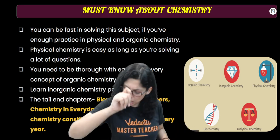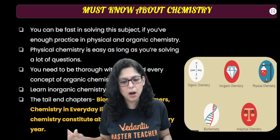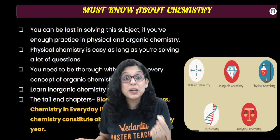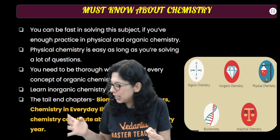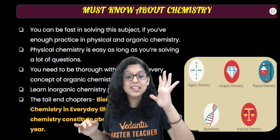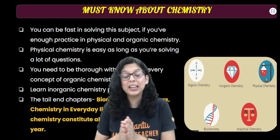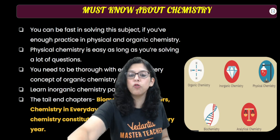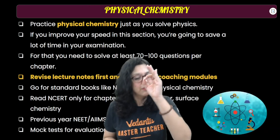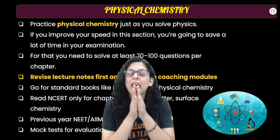The end chapters — where students always lose marks — are math, biomolecules, polymers, and chemistry in everyday life. Students tend to ignore these, but the examiner will definitely ask from here. Environmental chemistry and these chapters together contribute 4 to 6 questions in NEET, so do not skip them.